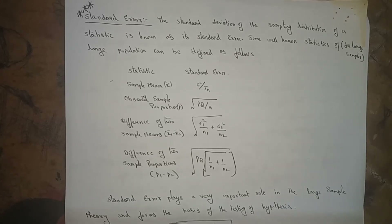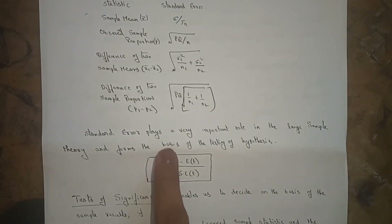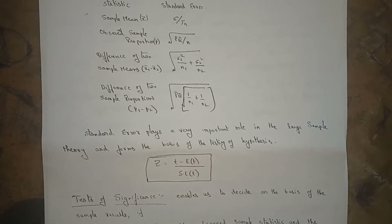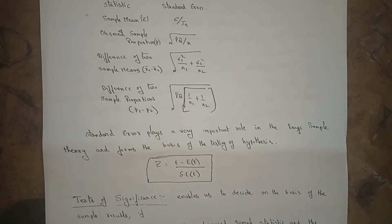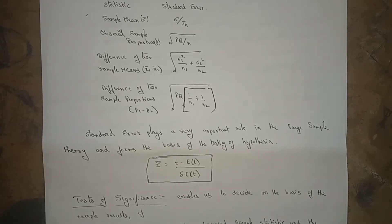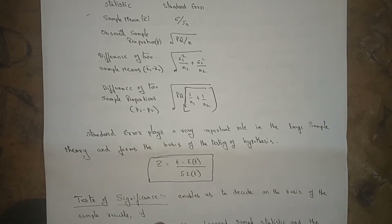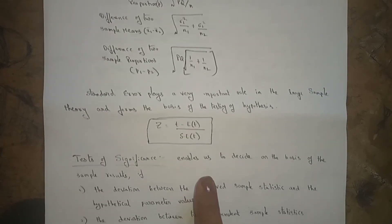Standard error plays a very important role in large sample theory and forms a basis of testing of hypothesis. The formula is: z = (T − E(T)) / S.E.(T). Standard error plays a very important role in large sample theory and forms a basis for testing of hypothesis using this z formula.